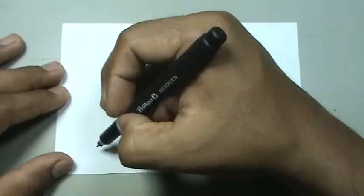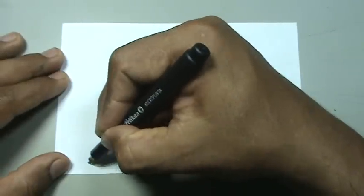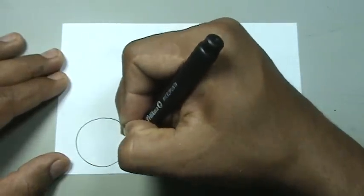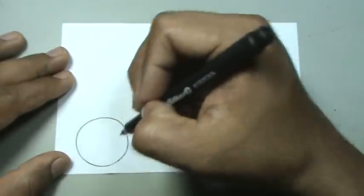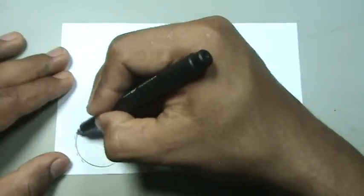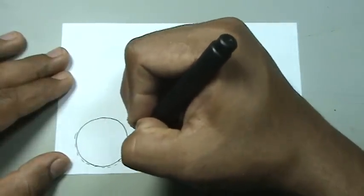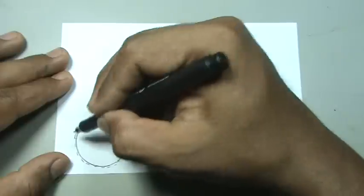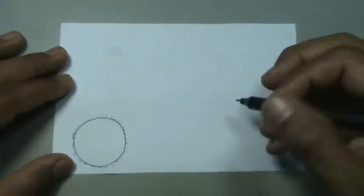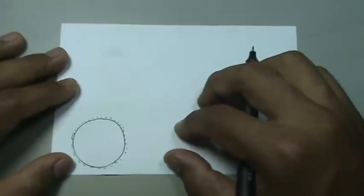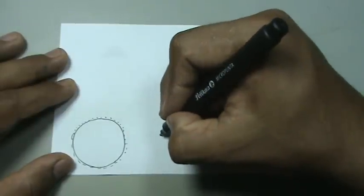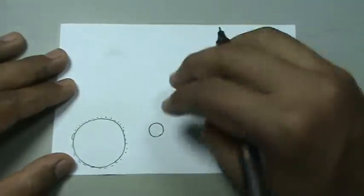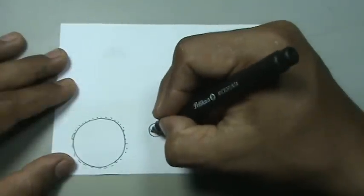Voy a empezar entonces por aquí abajo con lo que es el sol. Tenemos entonces nuestro sol. Ahorita le vamos a aplicar un poquito de color. Unas linecitas por aquí. Y seguido el sol entonces tenemos a mercurio. Voy a dejar aquí a mercurio con unas sombras.